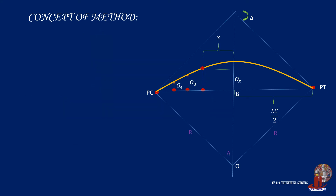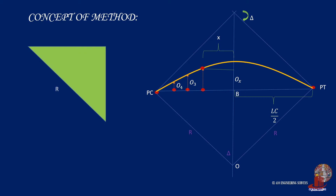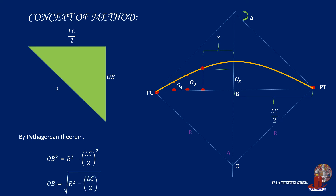The elements in the equation from the Pythagorean theorem are already known except OX, which is the required, and distance OB. In order to determine this element, let's use another right triangle with sides R, the required OB, and half of the long cord. The Pythagorean theorem can be applied once more: the square of the radius is equal to the squares of segment OB and half of the long cord. From here, extract OB squared, which gives OB as the root of the square of the radius minus half of the long cord squared.